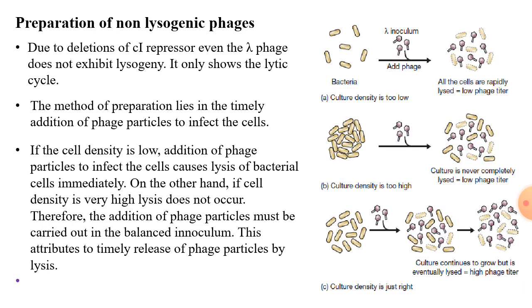Non-lysogenic phages are mostly used in genetic engineering experiments as they can only propagate through the lytic mode of cycle. Due to deletion of the CI repressor, even lambda phage does not exhibit lysogeny in labs and only undergoes the lytic cycle.